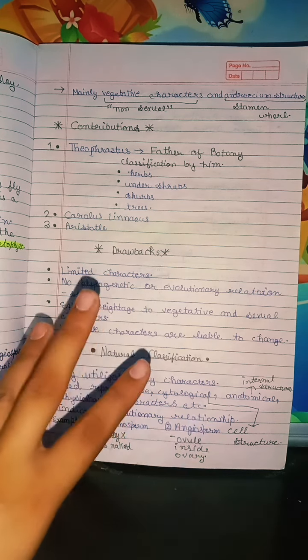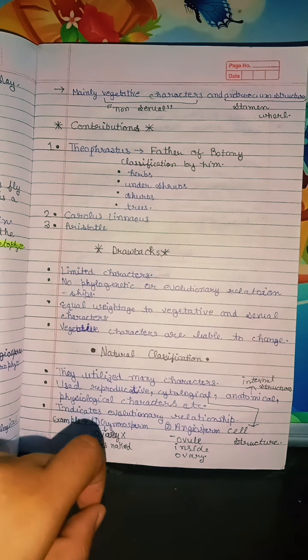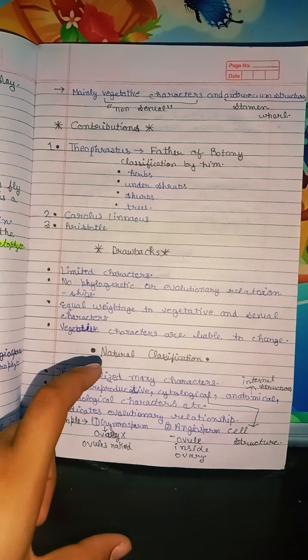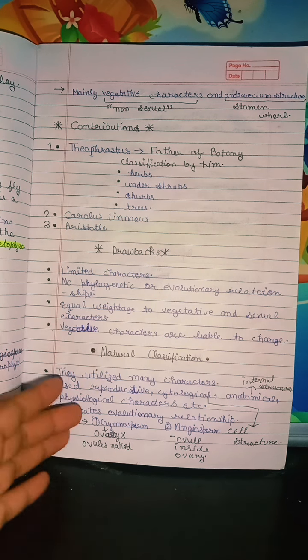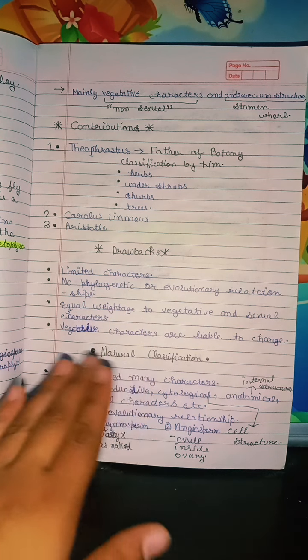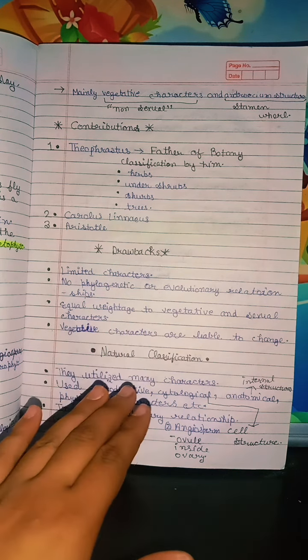Contributors include Aristotle. Then we have drawbacks. What was the drawback? The characters were limited. It ignored phylogenetic and evolutionary relationships.